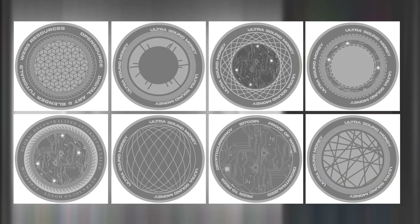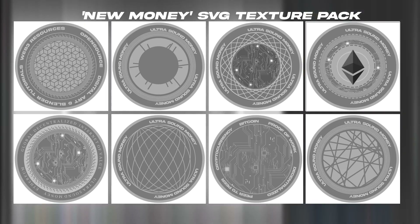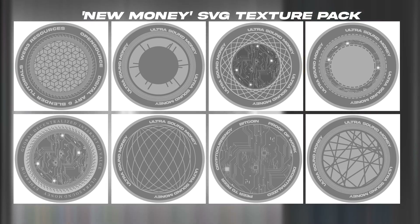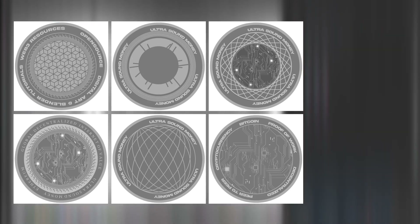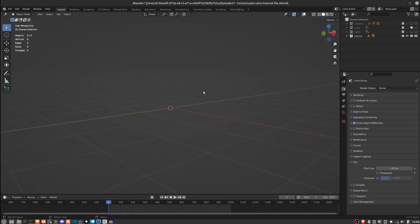You can get this texture pack with eight different futuristic-looking coin designs on Gumroad for a small price, which you can then slap whichever logo you want on top of and use in your projects. But if you just want to follow along with the tutorial, the free project file on Gumroad has one texture included that you can download and follow along with.